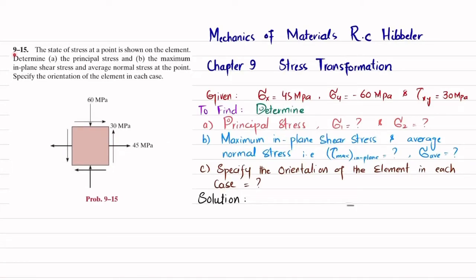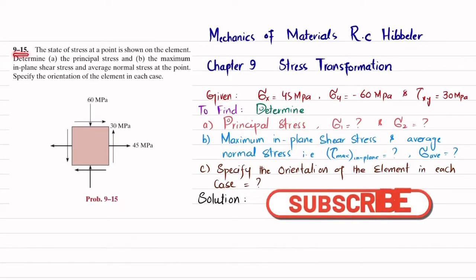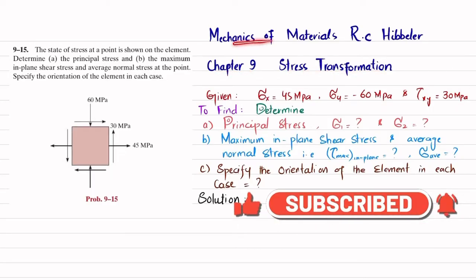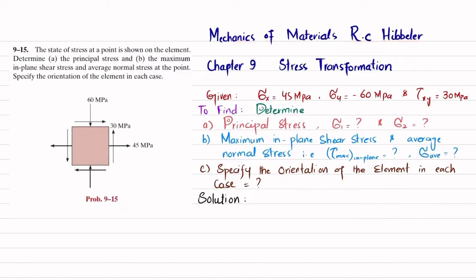Welcome back. Problem 9-15. This problem is taken from chapter number 9, that is stress transformation, from the book Mechanics of Materials by R.C. Hibbeler. The statement is: the state of stress at a point is shown on the element. Determine the principal stress, and in part B, the maximum in-plane shear stress and average normal stress at that point. Specify the orientation in each case.